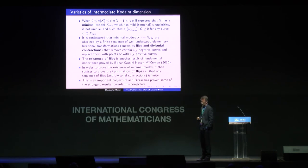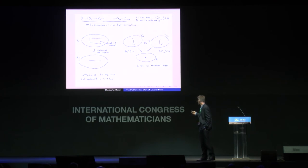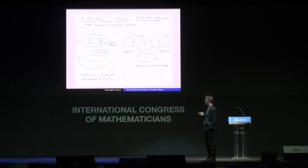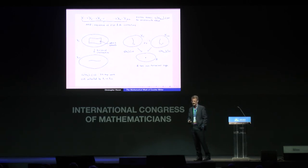The fact that we can only have finitely many divisorial contractions follows easily from topological considerations, but termination of flips is a very difficult problem. Birkar has proven some of the strongest results on this conjecture. Here is a schematic of the minimal model program: starting with a variety of non-negative Kodaira dimension, after performing finitely many flips and divisorial contractions, one hopes to obtain the minimal model. A divisorial contraction looks very similar to blowing up a smooth sub-variety in an ambient variety. A flip is a more complicated procedure where we take a curve that intersects the canonical class negatively and replace it by one that intersects the canonical class positively.